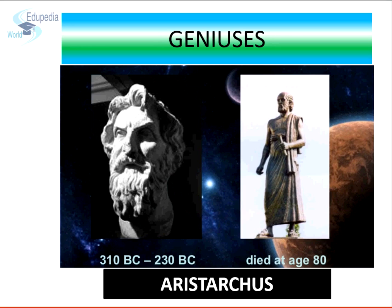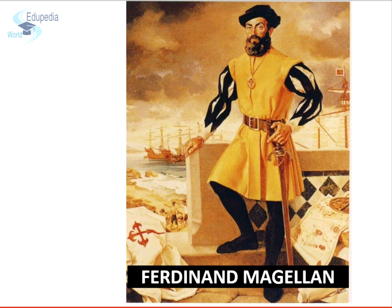In 300 BC, Aristarchus of Samos discovered that the earth spins every day and not the stars. He also told people that the earth travels around the sun. These ideas were not accepted by orthodox people until Ferdinand Magellan, the Spanish explorer, returned to Spain in his ship, Victoria, after sailing round the world, proving once and for all that the earth was round.